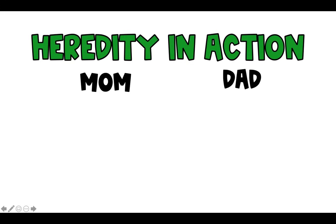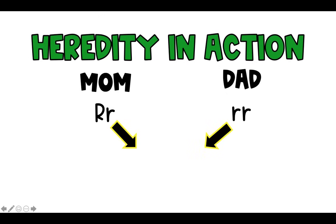Here's where students often get confused with Punnett squares. Your parents each had a set of instructions for everything about them, which means there's a total of four sets of instructions. But you can only receive two — one from each parent. They're only going to pass down one of their genes, and there are many different possible combinations of ways those genes can combine.